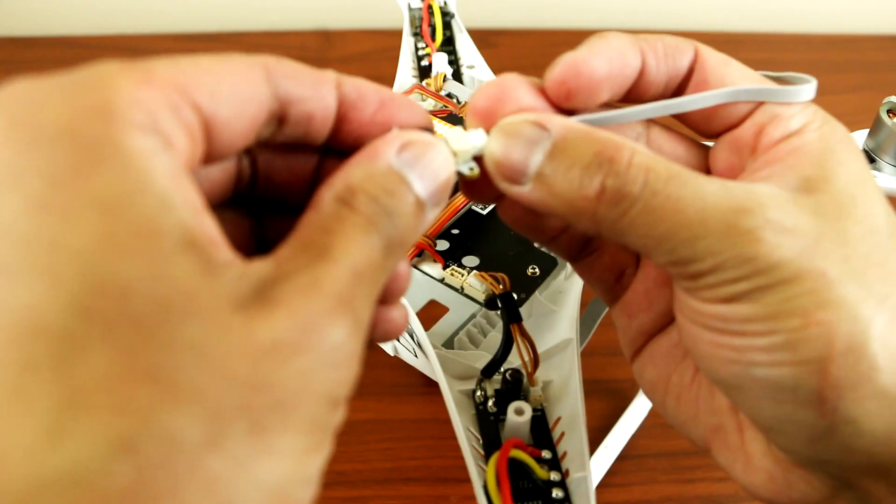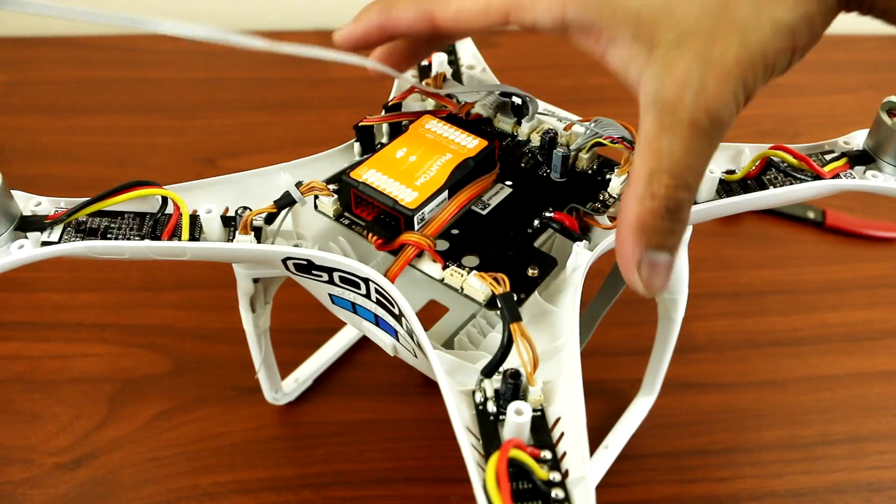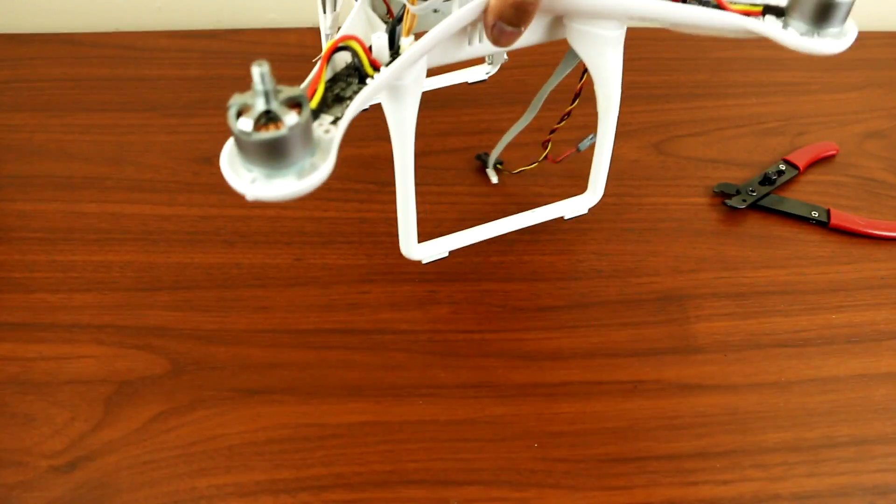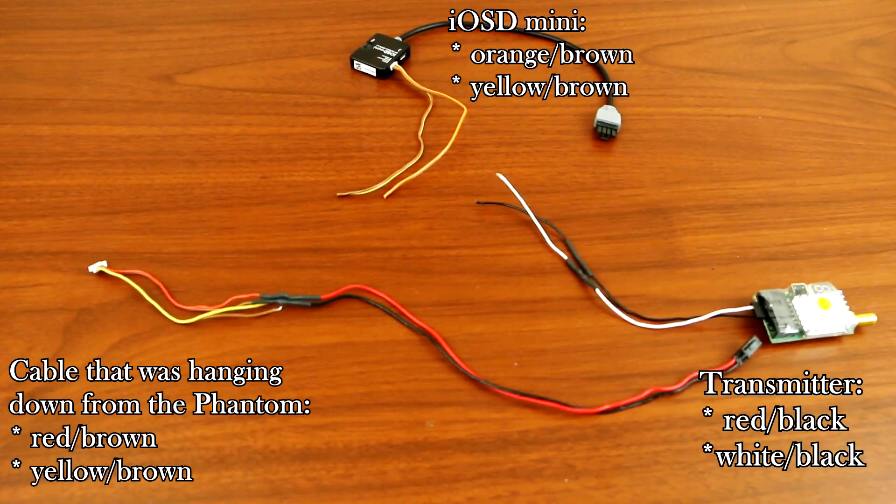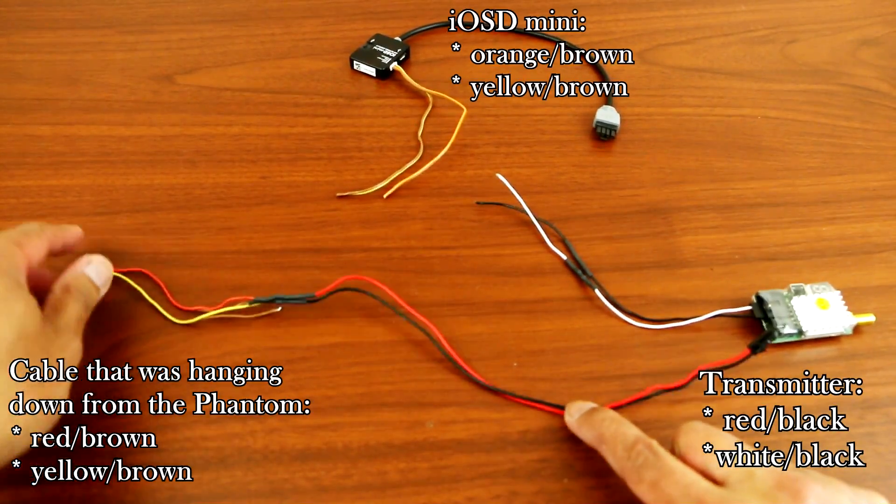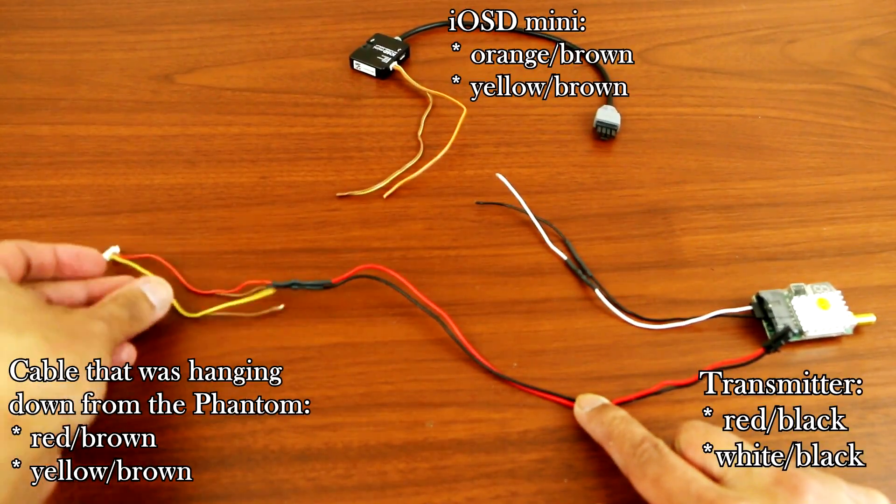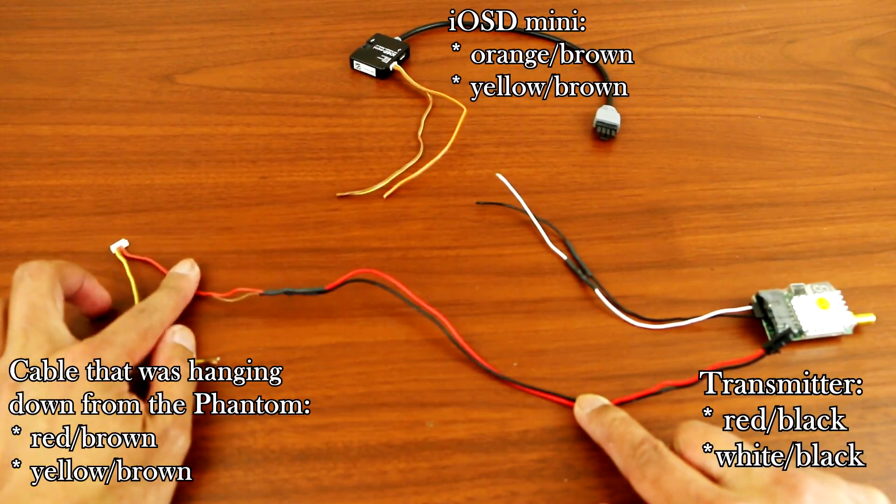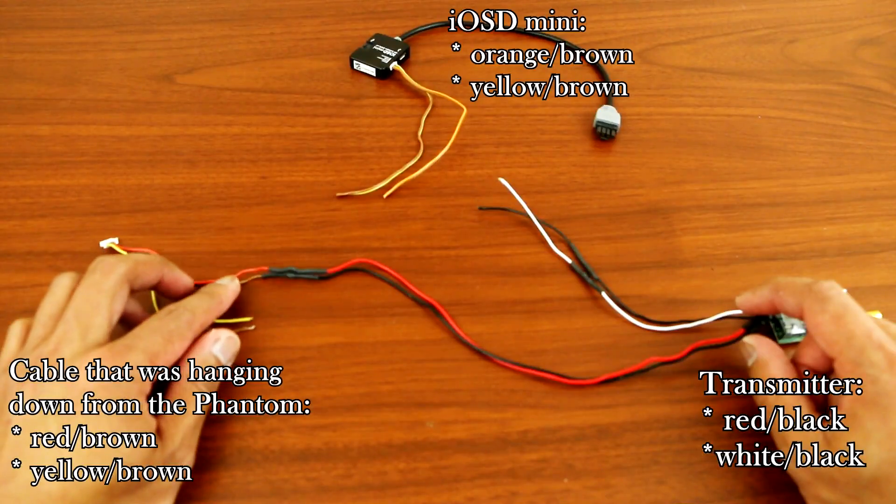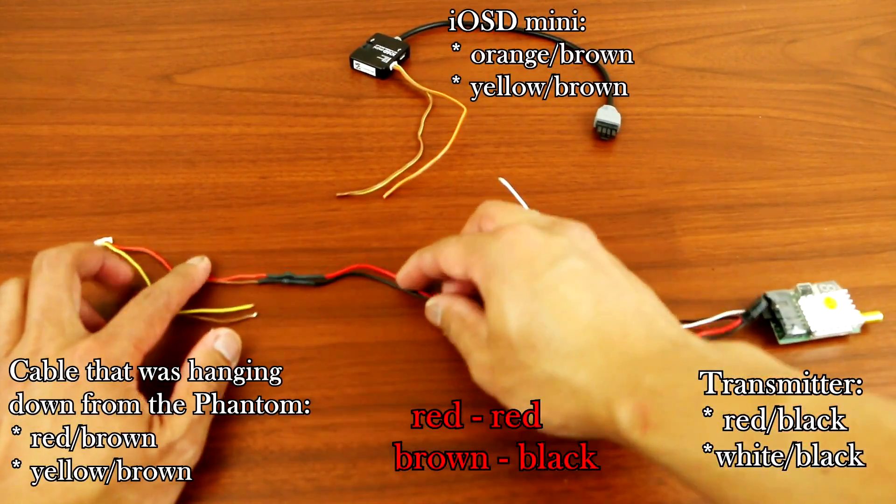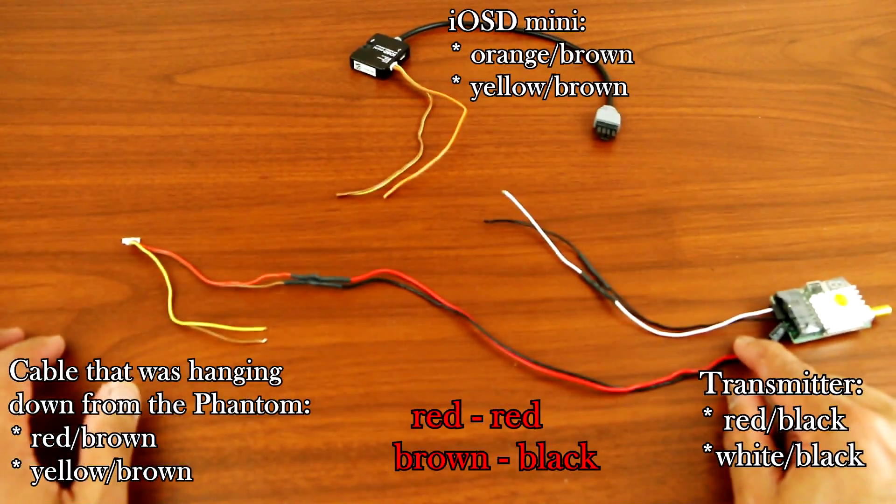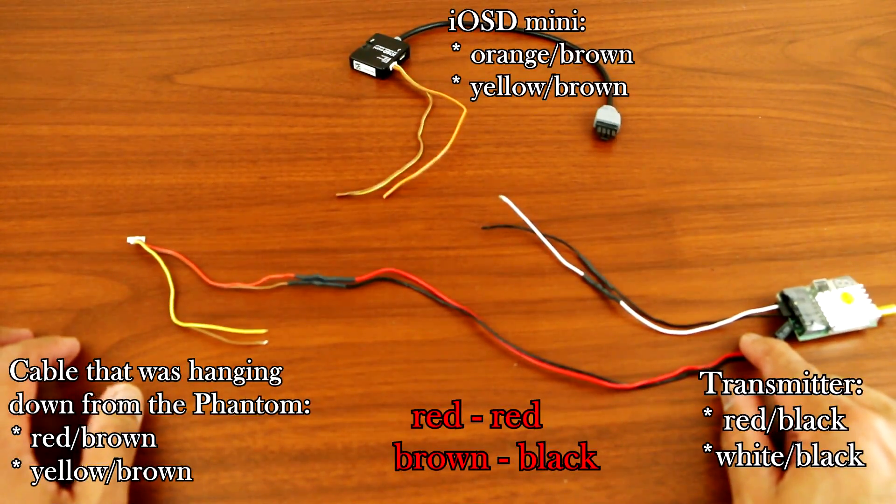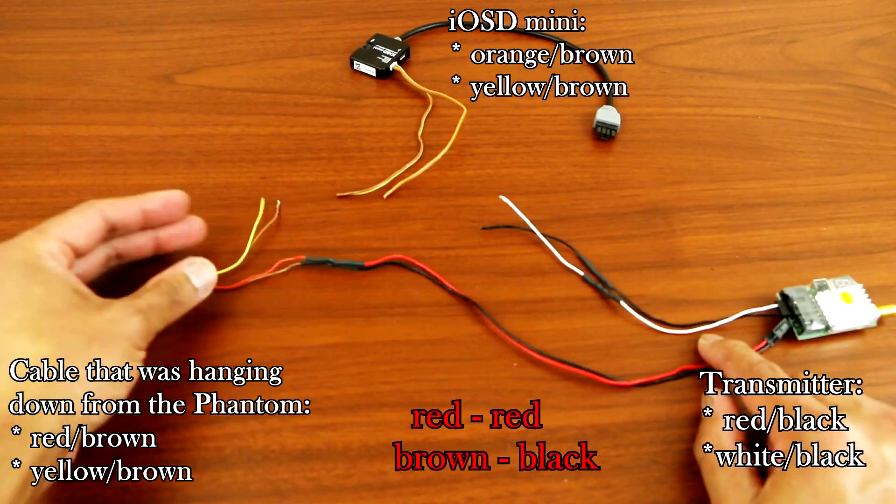This is from the Phantom. The red and brown will be connecting to the red and black, which will be attached to the transmitter for power.